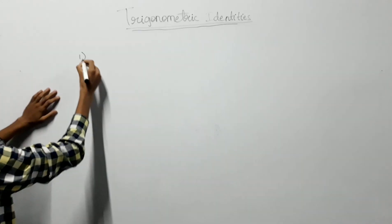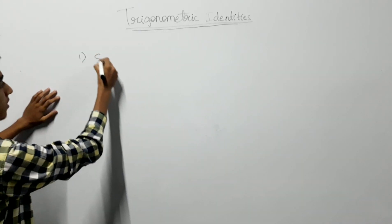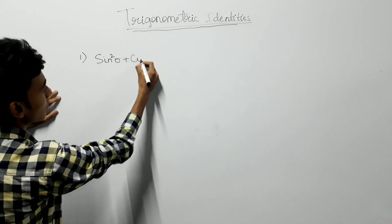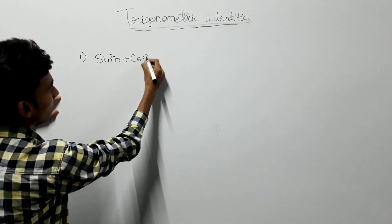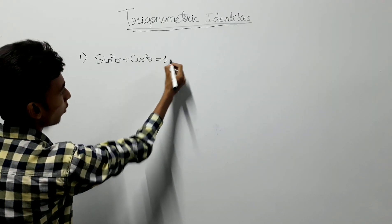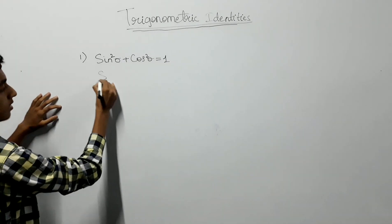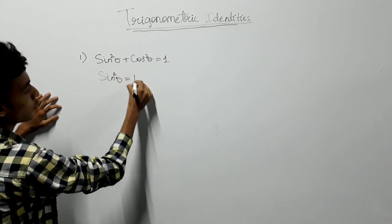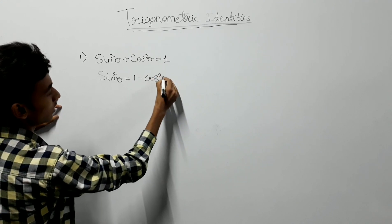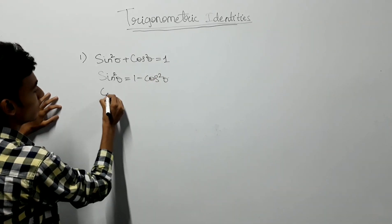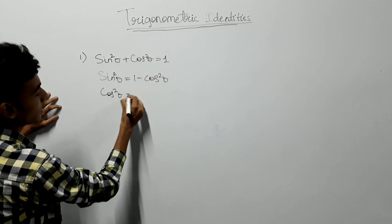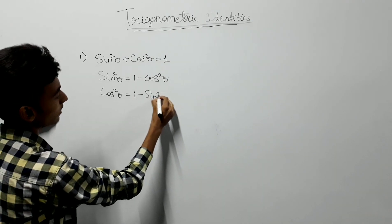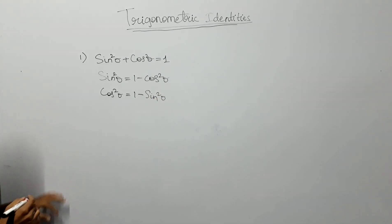The first identity is sin square theta plus cos square theta is equal to 1. From this, sin square theta can be written as 1 minus cos square theta, and cos square theta can be written as 1 minus sin square theta. This is the first identity.